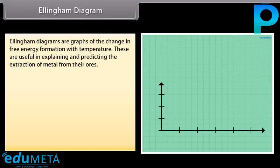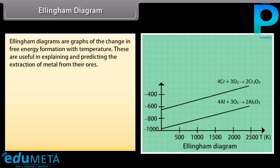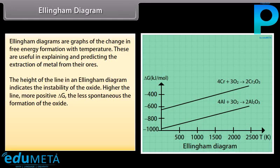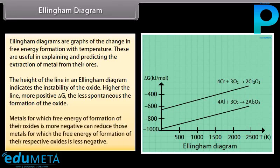Ellingham diagrams are graphs of the change in free energy of formation with temperature. These are useful in explaining and predicting the extraction of metals from their ores. The height of the line in an Ellingham diagram indicates the instability of the oxide — higher the line, more positive ΔG, and the less spontaneous the formation of the oxide. Metals for which the free energy of formation of their oxides is more negative can reduce those metals for which it is less negative.